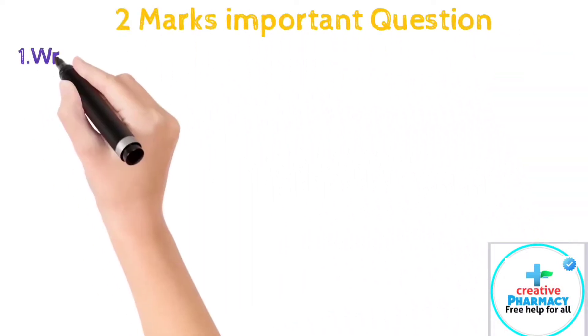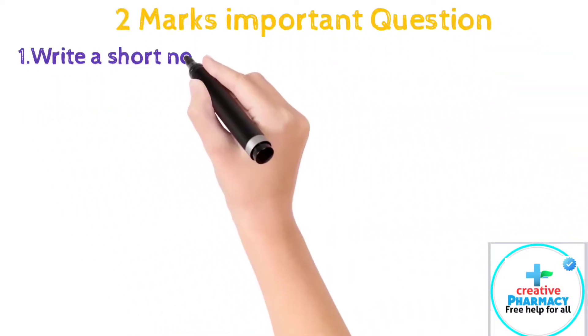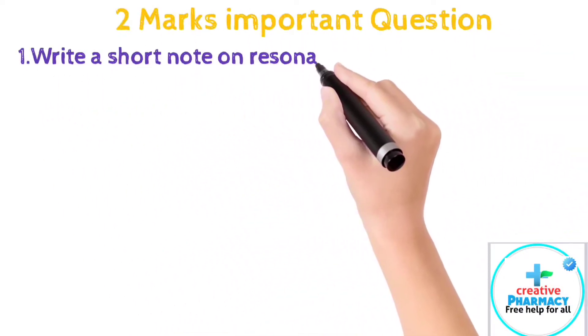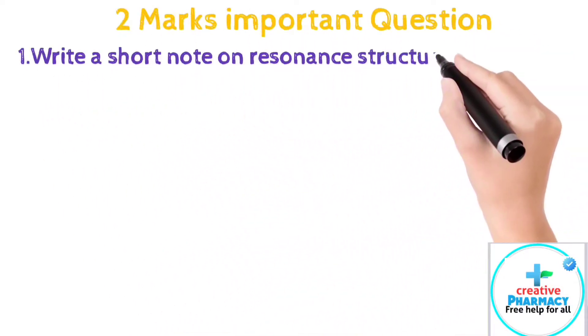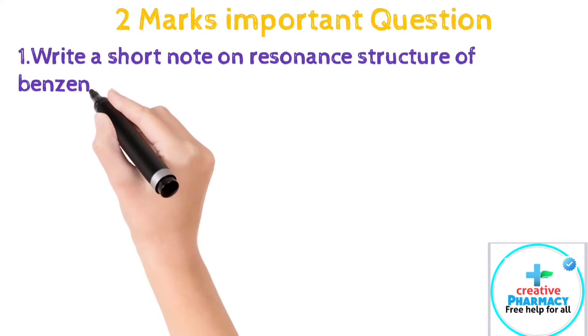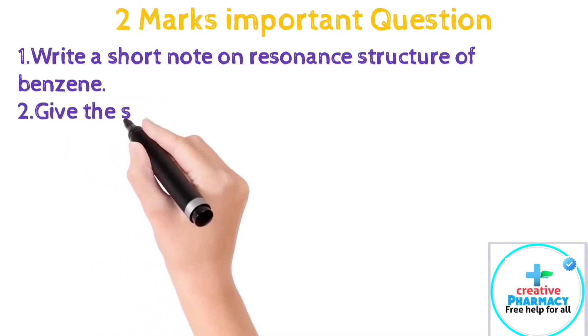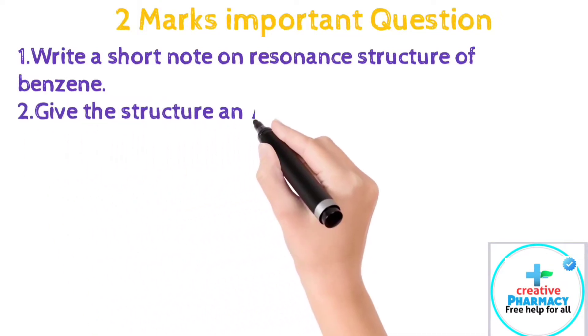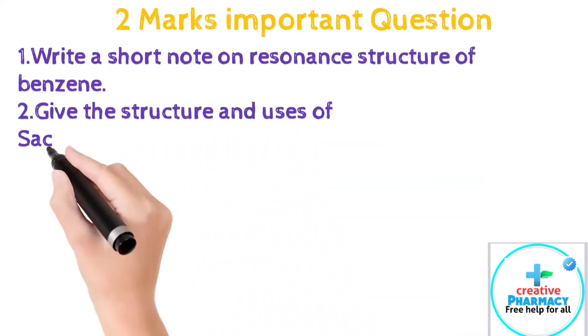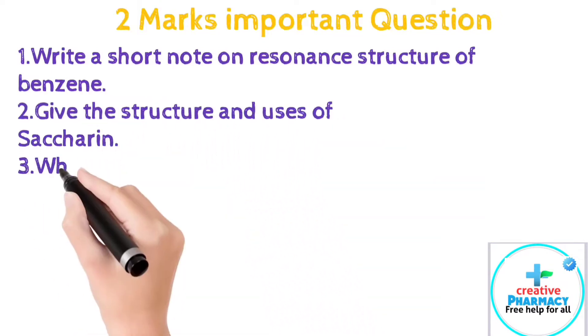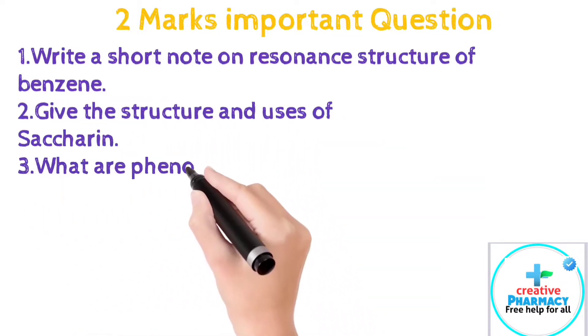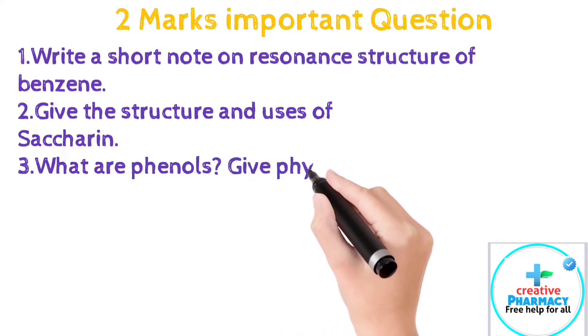Pharmaceutical Organic Chemistry 2 marks important questions. Question 1: Write a short note on resonance structure of benzene. Question 2: Give the structure and uses of saccharin.